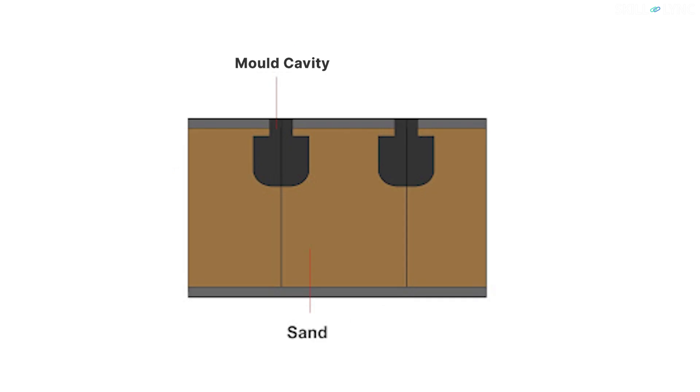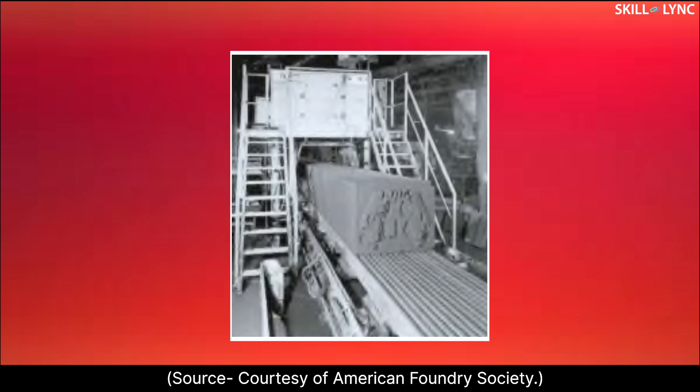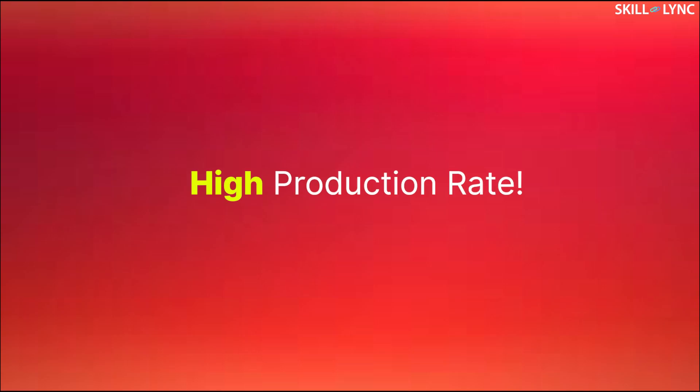After this, the mold halves are packed horizontally and moved along a pouring conveyor. It must be noted that the parting line is oriented vertically. This molding machine is extremely simple as it removes the requirement to handle flasks. The production rate for this machine is very high, especially if the coring and pouring systems are automated.